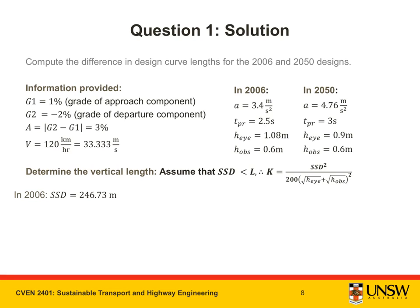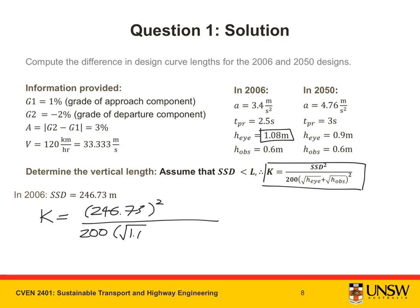Assuming that SSD is less than L, I would use this equation. Let me go ahead and solve for K for 2006. K is equal to SSD squared, which in 2006 was 246.73 meters squared over 200, square root of H_I, which was 1.08 in 2006, plus H_obs. Square root of H_obs, which was 0.6 in 2006, squared. Putting this into my calculator, I find that K is equal to 92.517.